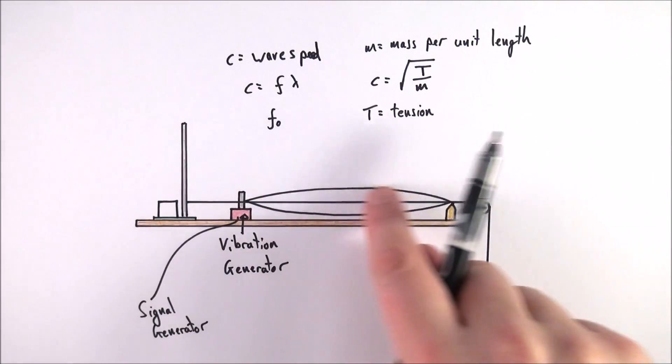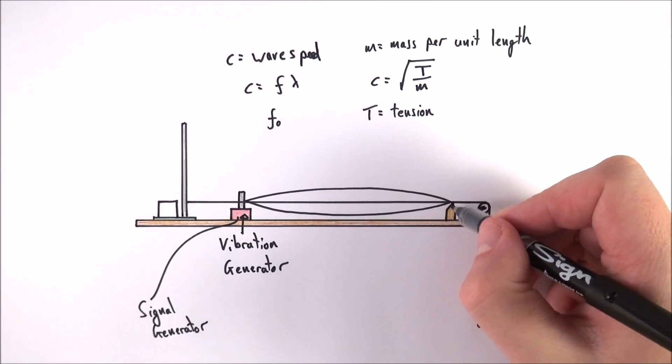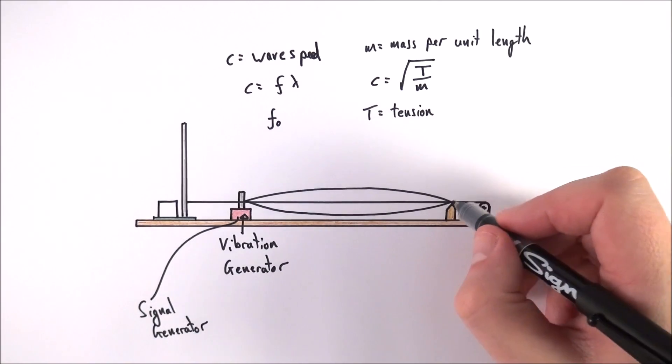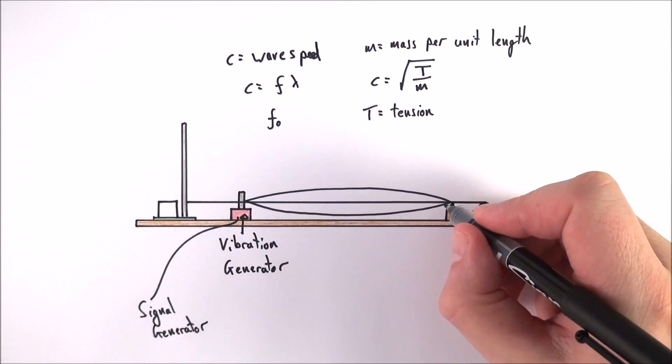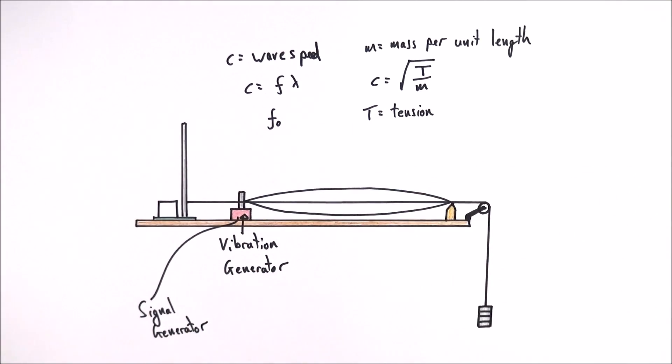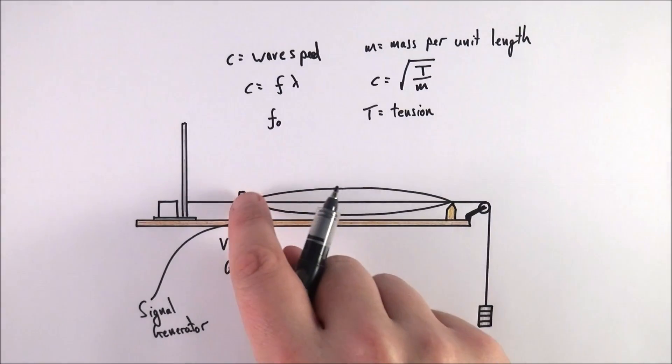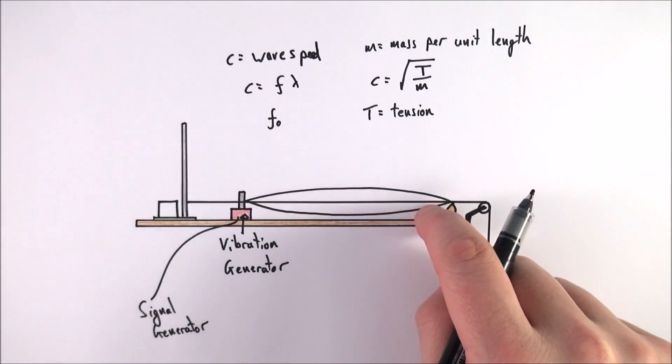This string is put over a bridge, which is basically a block of wood with a V-shape at the top. This allows us a definite endpoint at which to take our measurements. We can measure the length from the vibration generator to where the bridge is.